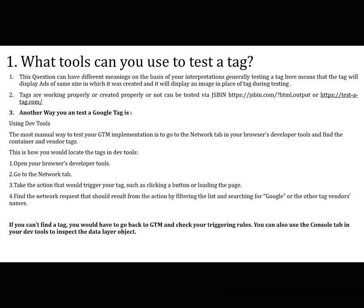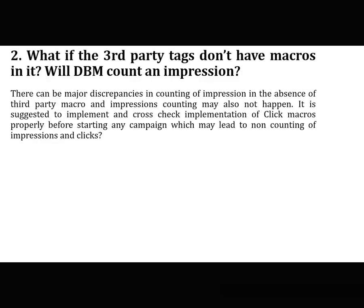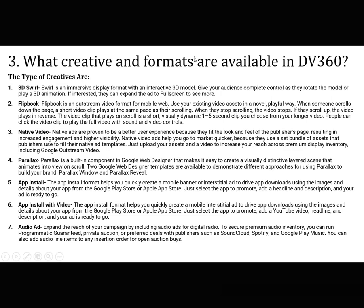The second question is: what if third-party tags don't have macros — will DV360/DBM count an operation? There can be major discrepancies in counting of operations in the absence of third-party macros, and counting may also not happen. It is suggested to implement and cross-check the implementation of click macros properly before starting any campaign, as missing macros may lead to non-counting of impressions and clicks.